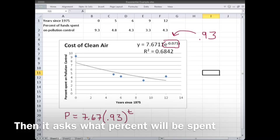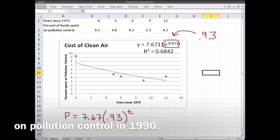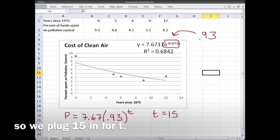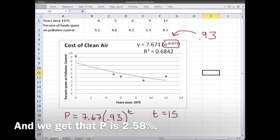Then it asks, what percent will be spent on pollution control in 1990? And that is 15 years after 1975. So we plug that in for t, and we get that P is 2.58%.